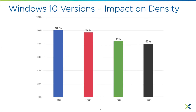From internal testing using Login VSI, we compared user density — the number of users per node before running out of CPU — across different Windows 10 versions. Across the bottom you can see the different Windows 10 versions, and the trend is clear: newer versions yield fewer users per node because the operating system uses more resources. This is not specific to Nutanix — it will affect any compute platform, and it's probably a surprise to most people.